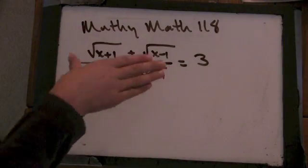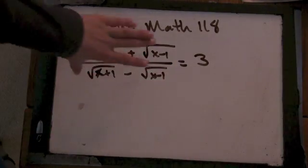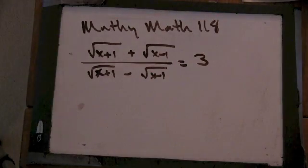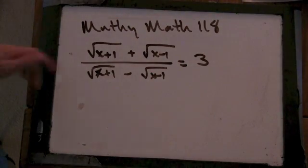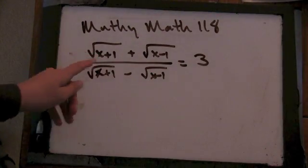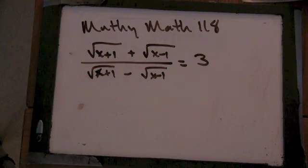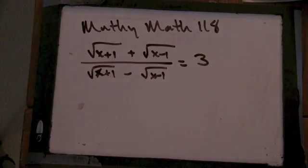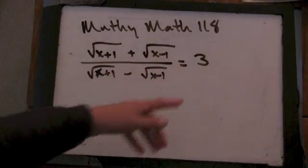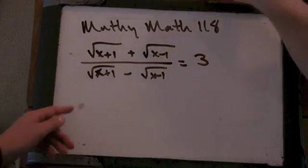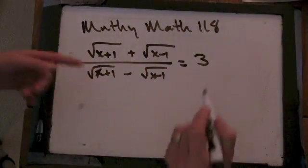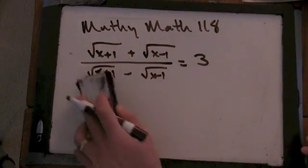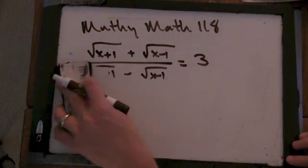I'd probably multiply this to the other side. Okay, and what do you get? You get x plus 1 plus the square root of x plus 1 plus the square root of x minus 1 on this side, equals 3 times the square root of x plus 1 minus the square root of x minus 1.